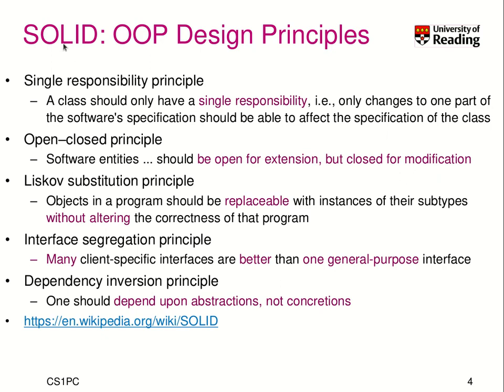The Open-Closed Principle means software entities should be open for extension but closed for modification. When we have a hierarchy like our person-student hierarchy, we should be able to extend it by adding a part-time student or a doctor. But in terms of modification, we should not change the overall behavior of something like a person — when you implement a doctor and try to change a person's name, it should actually change the name and nothing else. We are open for extensions but closed to modifying existing expected behavior.